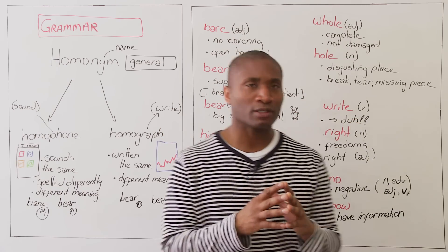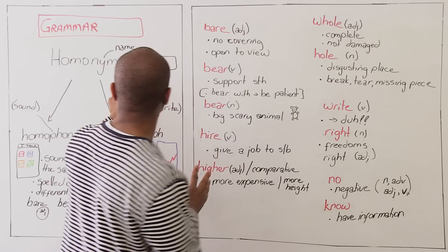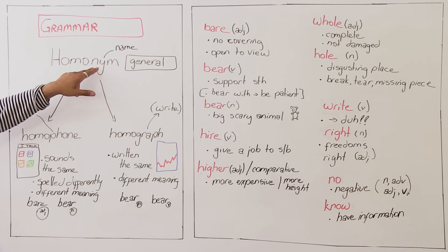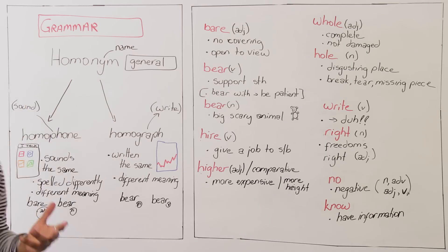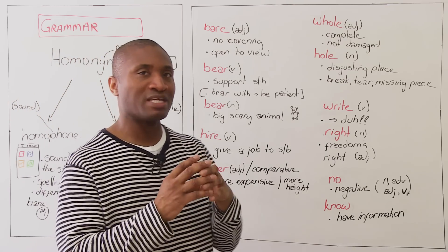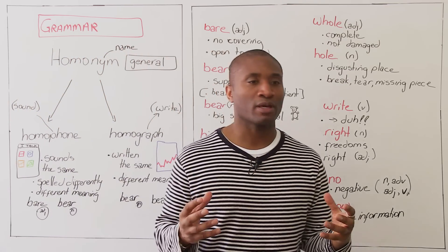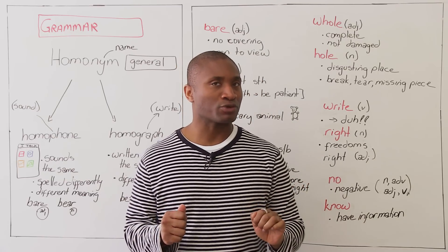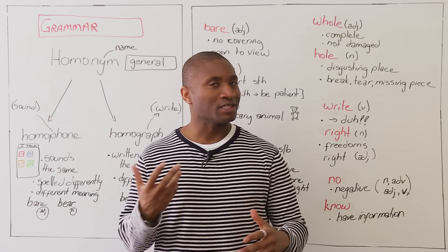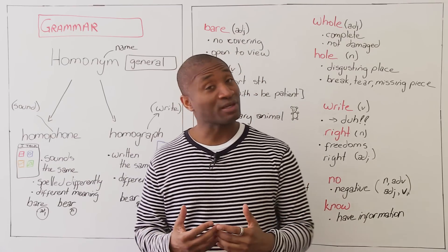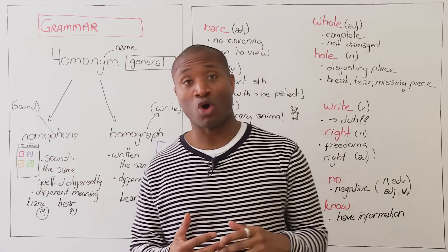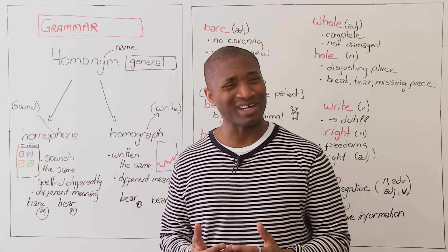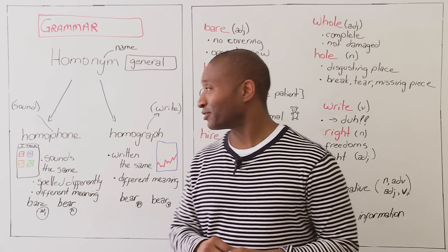What is a homonym? 'Nim' means name, and 'homo' means same — so it means 'same name.' But this is a general term. What we have to look at is not the general term, but the individual terms for grammar. Because some teachers may say to you, 'This is a homophone or homograph,' and you're going to say, 'What?' Well, I'll break it down for you.